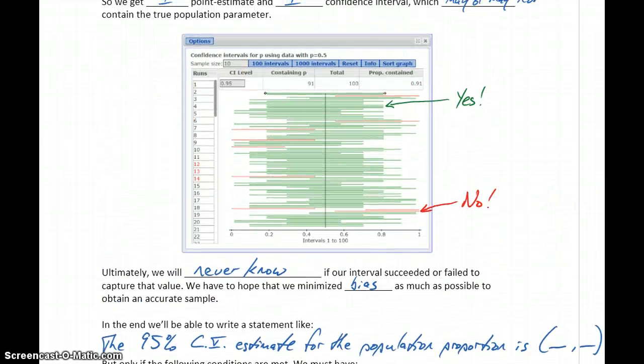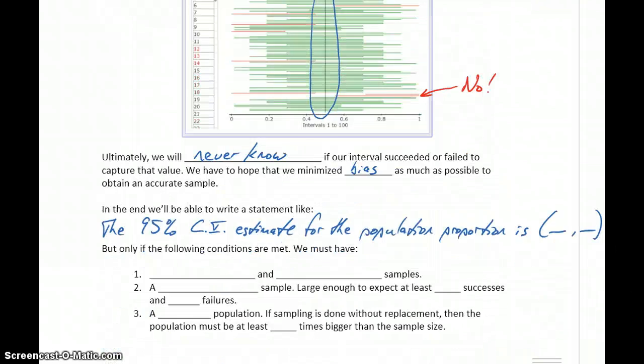But again, we need to keep in mind that we'll never know. In reality, we never know what this true population parameter is that we're trying to estimate. We use the flipping a coin example because we do know what that is, but in reality, we never know what that actual value is. So we never know for certain if our estimate captures that value or where in that range of values our estimate falls.